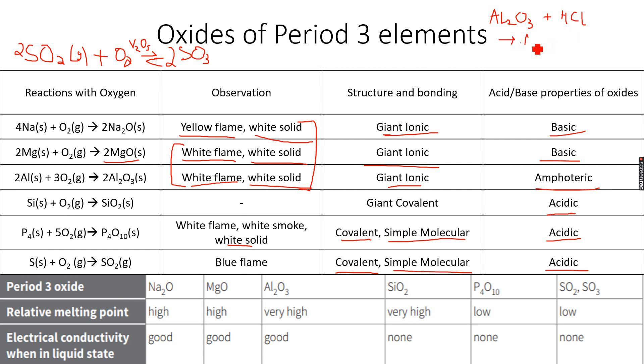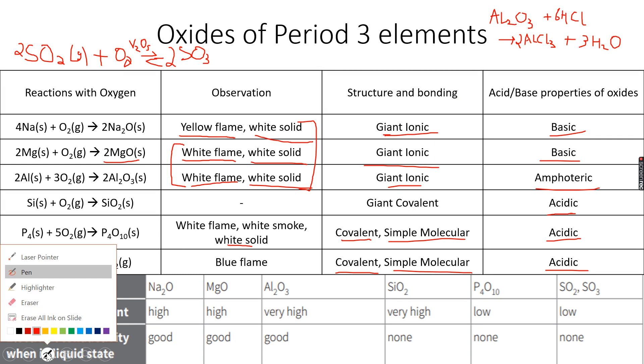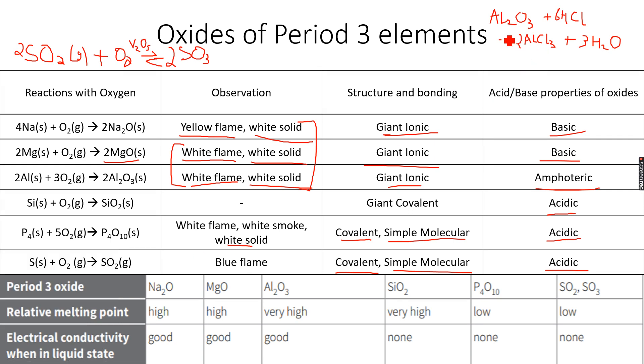We get AlCl3 plus H2O. Let's balance this very quickly. Now it's balanced: AlCl3 plus H2O. When Al2O3 reacts with an acid, a very simple reaction takes place. In this case, Al2O3 is acting as a base because HCl is an acid and Al2O3 is therefore acting as a base.